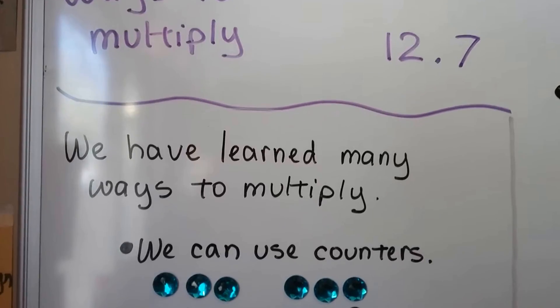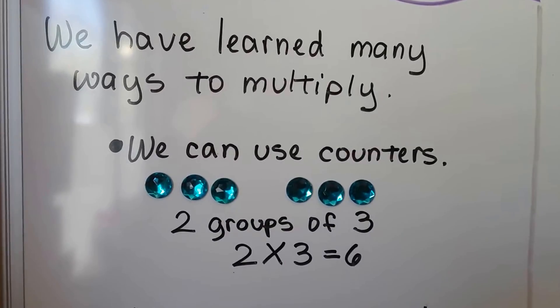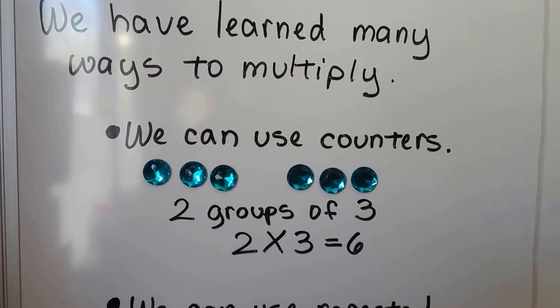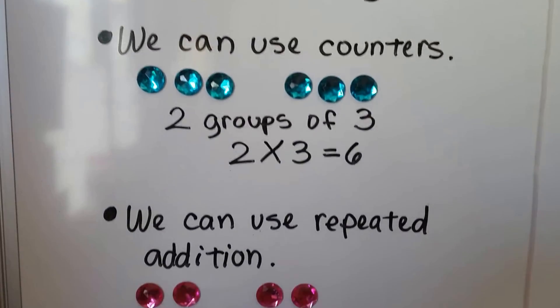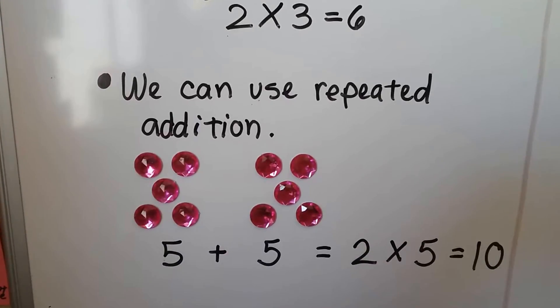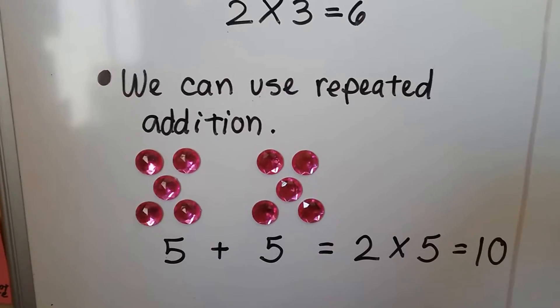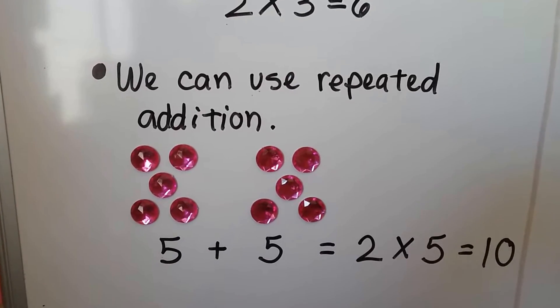We've learned many ways to multiply. We can use counters. Here we have two groups of three, so that's 2 times 3 equals 6. And we can use repeated addition. Here we have a group of five gems and another group of five gems, and 5 plus 5, well that's the same thing as 2 times 5, and that equals 10.